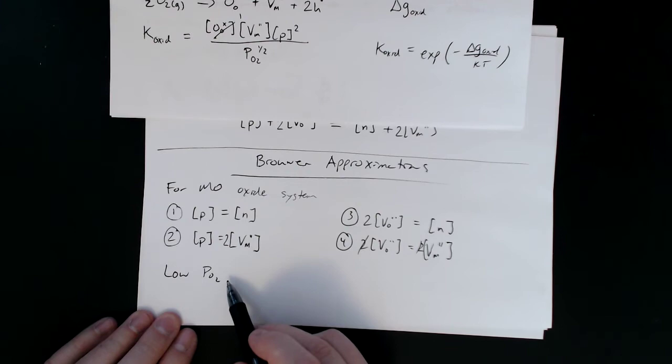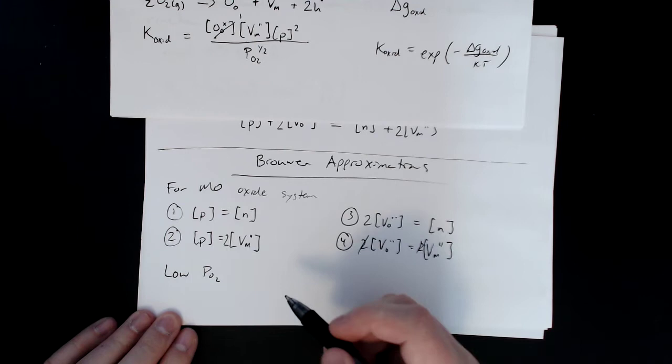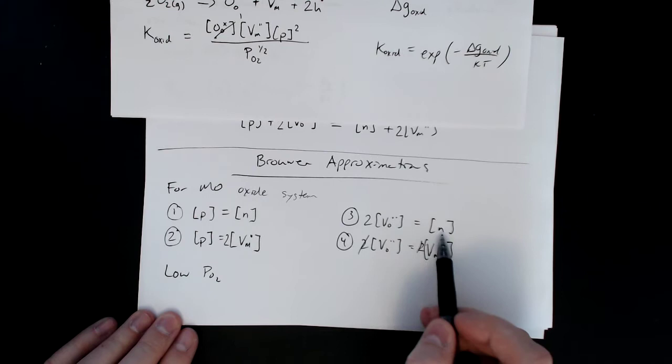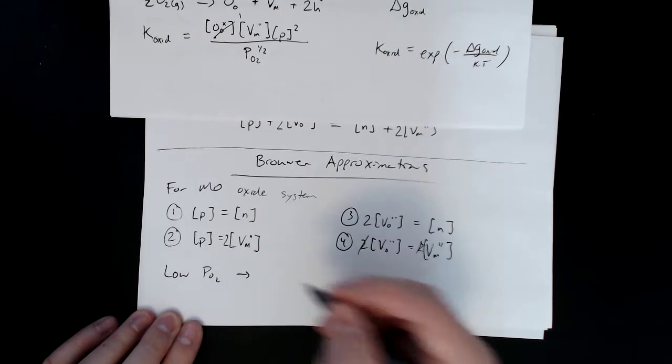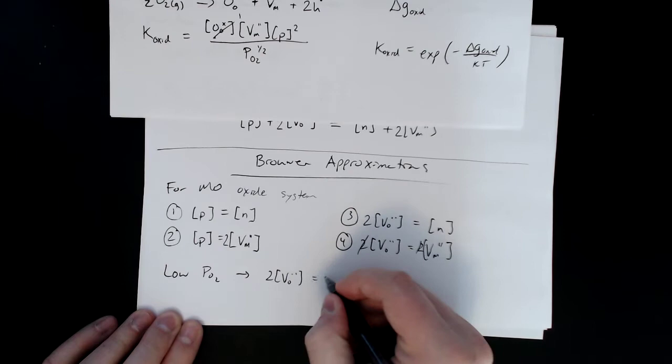And so this one over here, it has oxygen vacancies and electrons in the same kind of range, and so that approximation is what we're going to use to simplify that expression because we have a similar type of relationship.